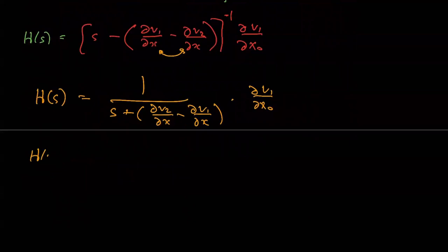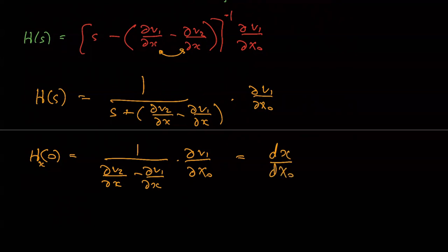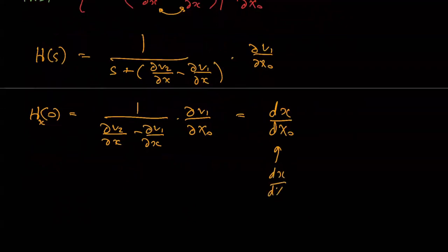Now at zero frequency, it's one over dv2 minus dv1 dx times dv1 dx0, and that equals d, which is the sensitivity dx by dx0. Now I want to scale this side so this thing becomes dx dx0 x0 over x.